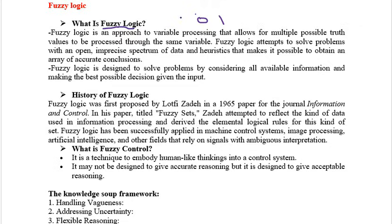Fuzzy logic considers the consistent result from multiple outcomes coming for a particular question. Fuzzy logic attempts to solve problems with open, imprecise data and heuristics that make it possible to obtain an array of accurate conclusions. The main theme of fuzzy logic is to gather accurate conclusions — to get the correct results. If the majority said 'no', the result is 'no'; if majority said 'yes', the result is 'yes'. The overall result is determined by the majority.